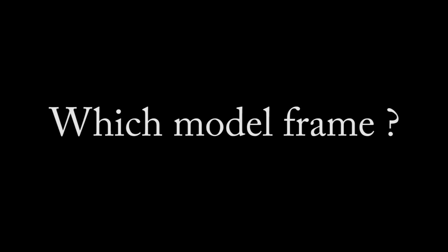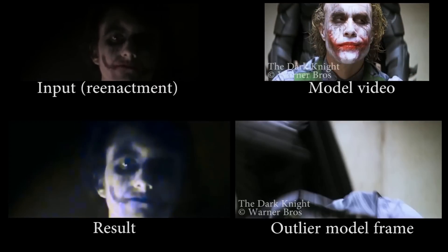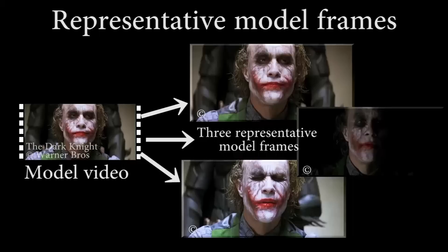Although we are now able to transfer the colors of a particular frame of the model to a frame of the input video, the question arises of the choice of this model frame. For example, transferring the colors of an outlier frame from the Dark Knight movie produces an unexpected result. Our technique first automatically clusters the model video into a small set of representative model frames, restricting processing and reducing the chance that a bad model frame is automatically chosen. For each frame of the input movie, we then select the closest representative model frame in appearance and estimate the color transformations.